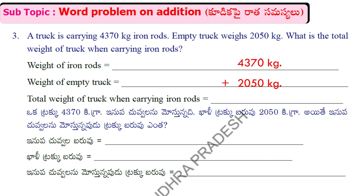So we will add this column. We will add the place values. 0 plus 0 is equal to 0. Next, 7 plus 5 is equal to 12. We will write this in this place and carry over. Now we will add the digits in each column.